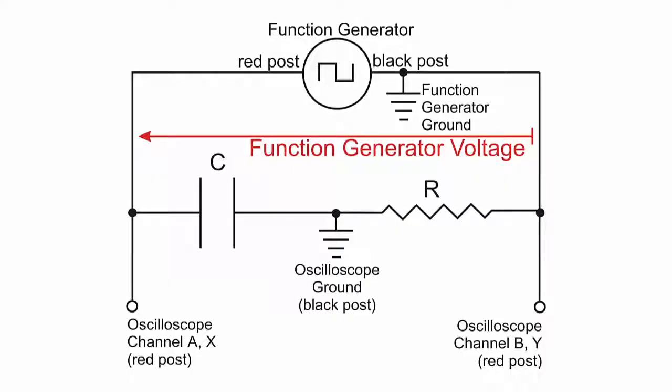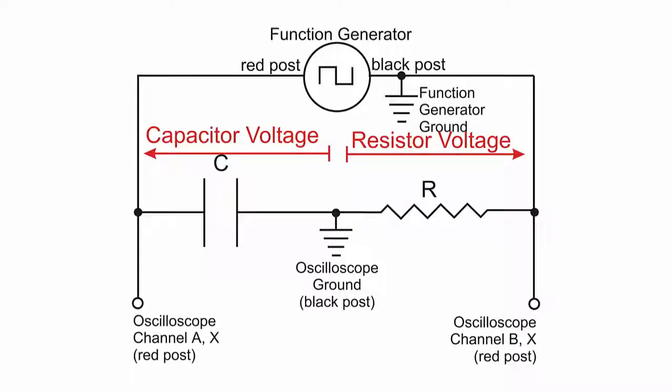If I measure the voltage of the function generator relative to its own ground, I measure to the left in this diagram. But the oscilloscope measures the voltage of the capacitor and the voltage of the resistor relative to its own ground. So the capacitor voltage is measured to the left and the resistor voltage is measured to the right. We want to measure the resistor and capacitor voltages both in the same direction so that we can add them.